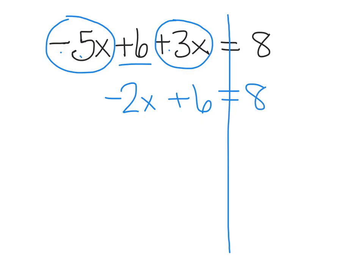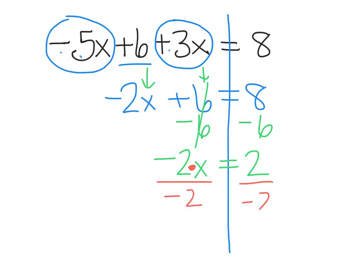Now we have a two-step equation. Just like we've solved every other two-step equation, we're going to start by getting rid of the term that is furthest away from our x. That would be the 6. So I'm going to subtract 6 from both sides. These cancel and I get negative 2x equals 2. For the final step, I need to undo this multiplication, so I'm going to divide by negative 2. These cancel and I get x equals 2 divided by negative 2, which is negative 1. So that is my answer.